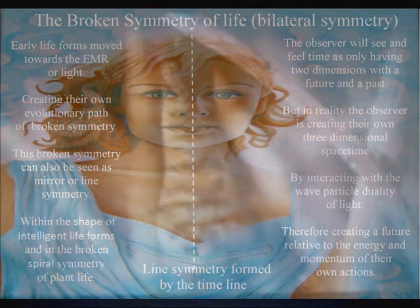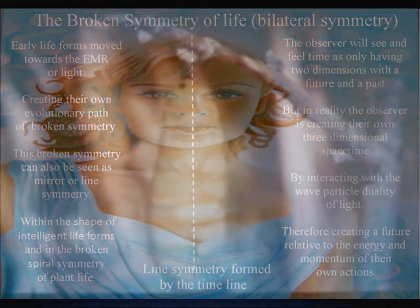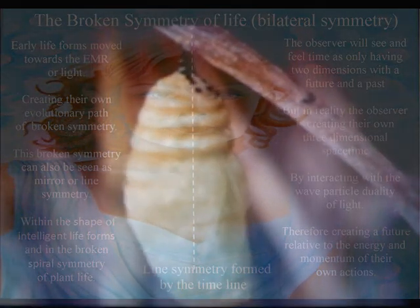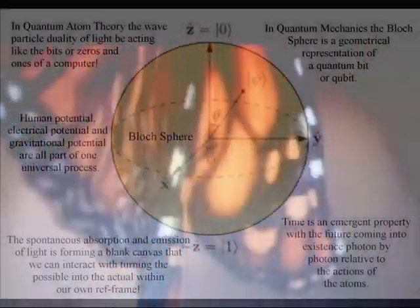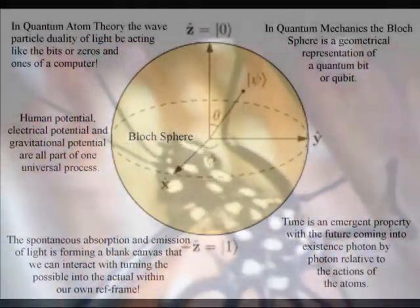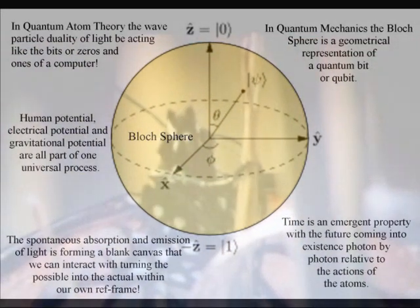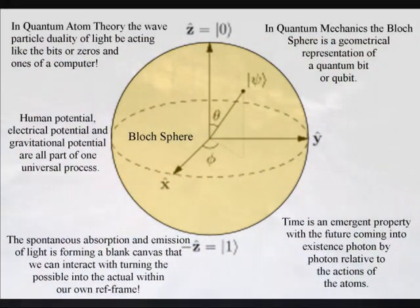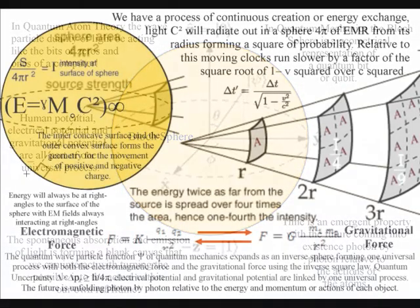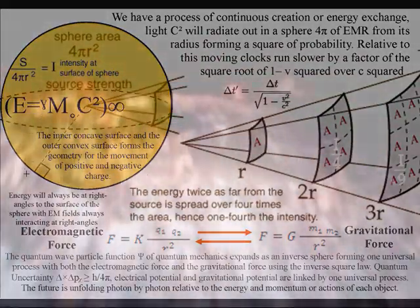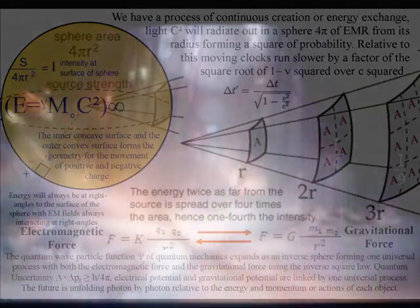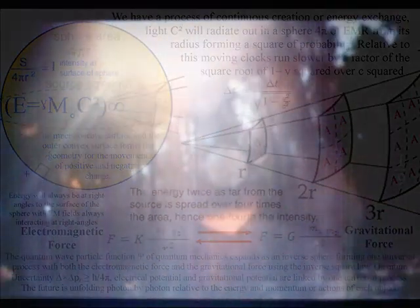In this theory, life is the creator of creation, with the wave-particle duality of light and matter in the form of electrons forming a blank canvas that we can interact with, forming the possible into the actual. The future is unfolding with each new photon-electron coupling or dipole moment relative to our actions. This can be in the form of art, music or poetry. This process forms a potential infinity of possibilities, with creation in the hand and eye of the beholder.